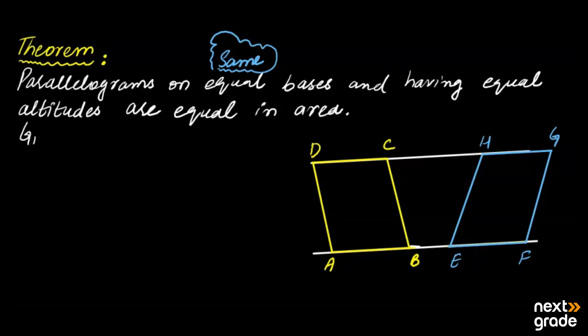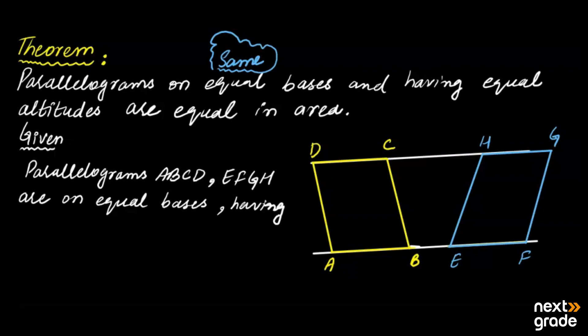Now we have to write given. Given that parallelograms ABCD and EFGH have equal basis, and the other condition given is having equal altitudes. Okay, equal altitudes.